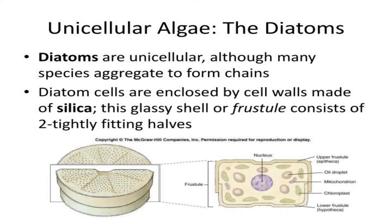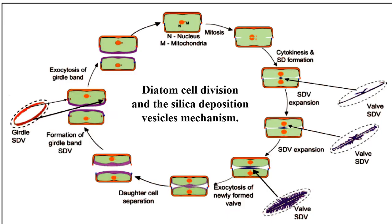This glassy shell, or frustule, consists of two tightly fitted halves. Diatoms absorb silica from the environment with the help of a silica deposition vesicle mechanism and deposit it on the cell wall.